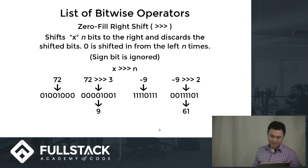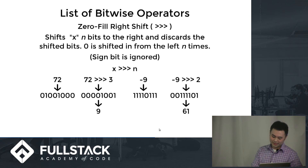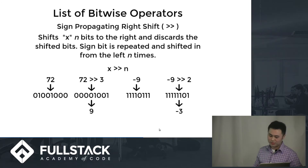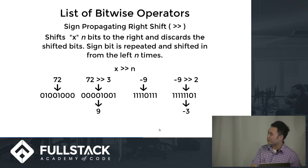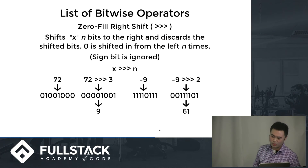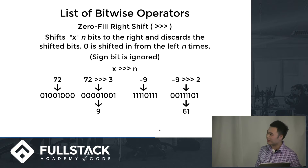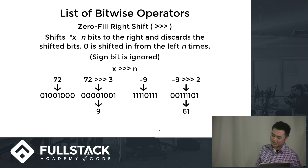A zero fill right shift is like a sign propagating right shift, but it always fills with zeros from the left. That means when you right shift a negative number, it always becomes positive.